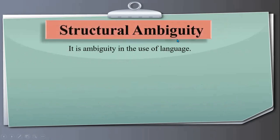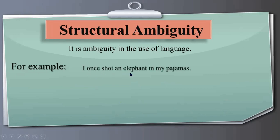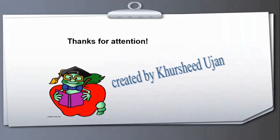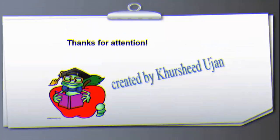Structural ambiguity in syntax refers to ambiguity in the use of language when a sentence has a double meaning. For example: 'I once shot an elephant in my pajamas.' This sentence could mean: 'I shot an elephant while I was in my pajamas,' or 'I shot an elephant which was in my pajamas.' These two interpretations represent structural ambiguity in language — and this study is part of syntax in linguistics. Thanks for your attention — hopefully this was a helpful lecture.